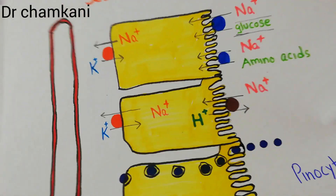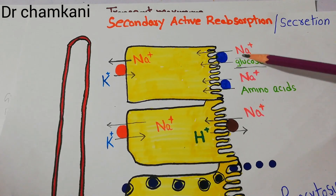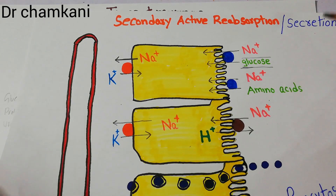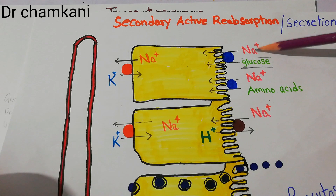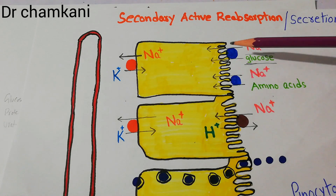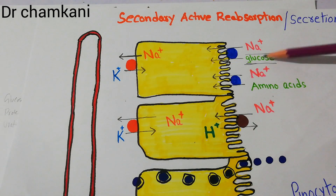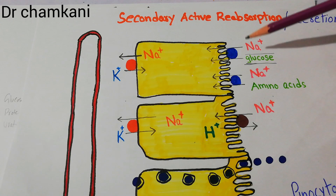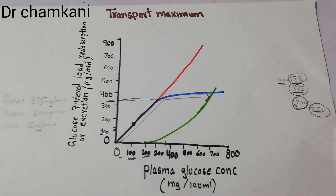This occurs because carrier proteins help sodium and glucose get reabsorbed in the proximal tubule. These carrier proteins help in the reabsorption of sodium and glucose through active transport — primary active transport for sodium and secondary active transport for glucose. When all the carrier proteins — all the rides of sodium and glucose — are occupied, there is no remaining carrier protein to help reabsorb glucose from the proximal tubule into the blood, and the remaining glucose starts appearing in urine. When the filtered load crosses 375 mg per minute, all of the remaining glucose will appear in urine, and that point is known as the transport maximum for glucose.